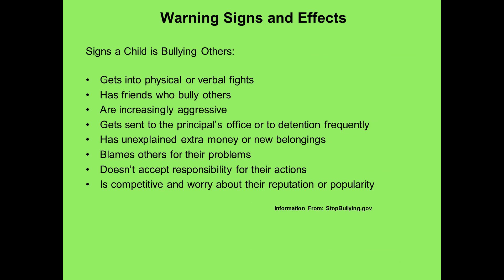Here are some signs of a child who is bullying others. They get into physical and verbal fights, have friends who are bullies, and show increasingly aggressive behavior. They get in trouble and are sent to the principal's office. They may have unexplained extra money or new belongings — if they're bullying someone and taking things from them. They often blame others for their problems and don't accept responsibility for their own actions. They are competitive and worry about their reputation or popularity, placing great importance on how others view them.